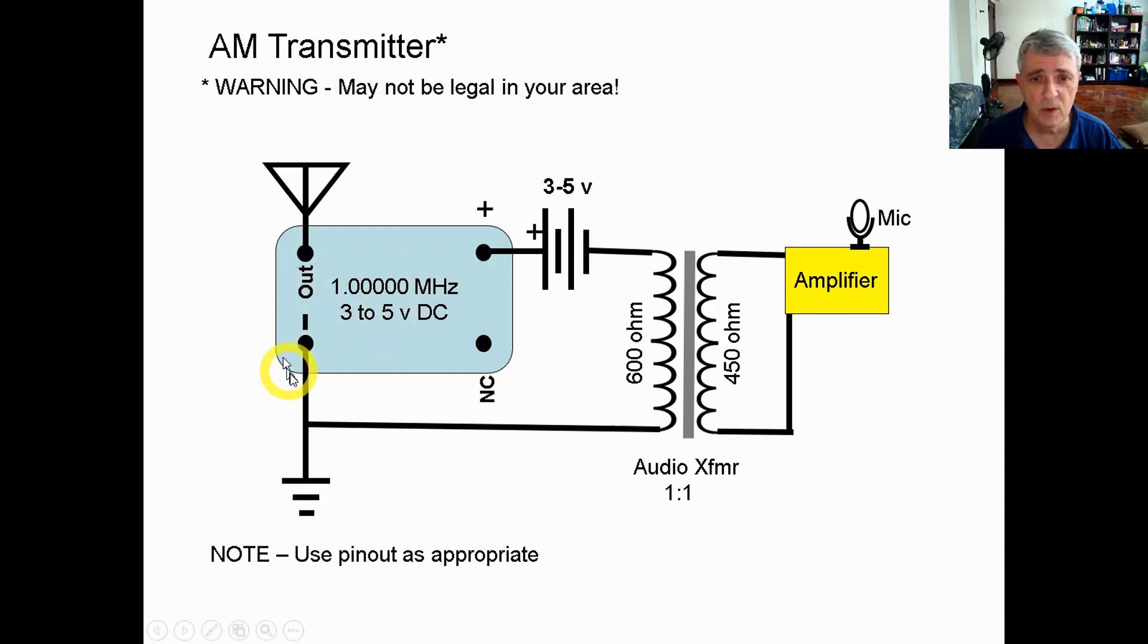Okay, let's talk about the main components here. The first one is this oscillator, and this comes out of an old computer. This one is one megahertz. You're going to need one that's in the range of the AM band, which is 1.6 megahertz down to 550 kilohertz. They operate on 3 to 5 volts DC typically.